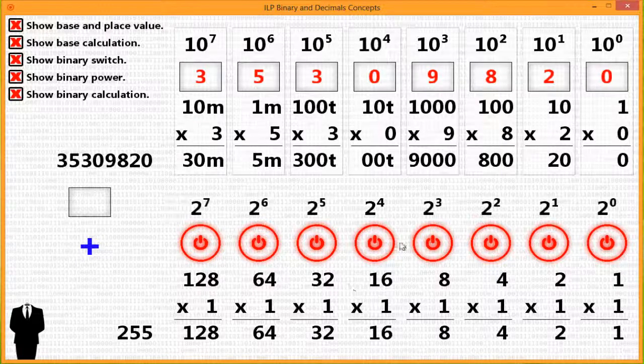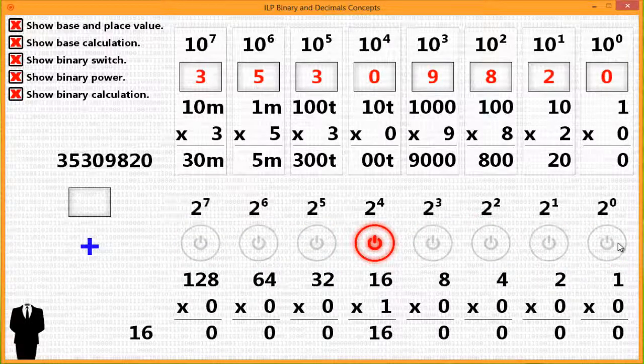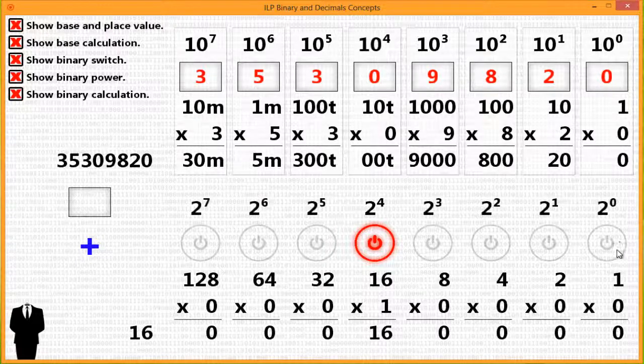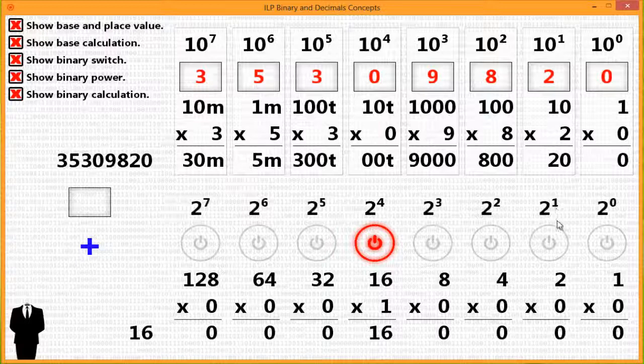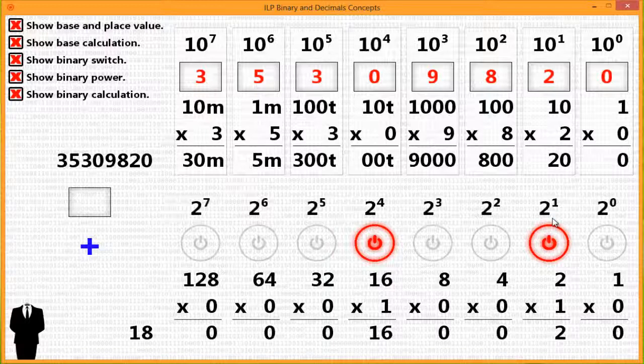So if you turn it off, off means 0. So 1 times 0 is 0. 2 to the 1st power is 2 times 0 is 0. And if we were to turn on 2 to the 1st power, 2 times 1 is 2.